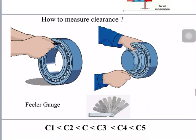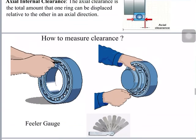To measure bearing clearance, generally for spherical roller bearings or cylindrical bearings we use a feeler gauge. The feeler gauge has different blades of different thicknesses. We need to insert these blades in between the rollers and the raceway to get the proper bearing clearance. Here I am showing the unmounted bearing clearance.